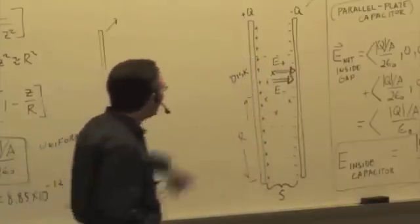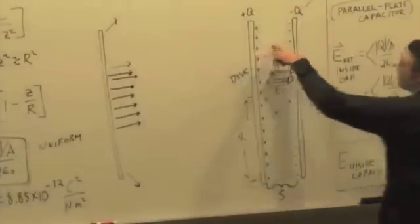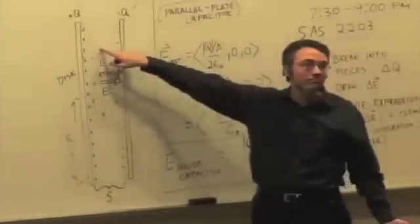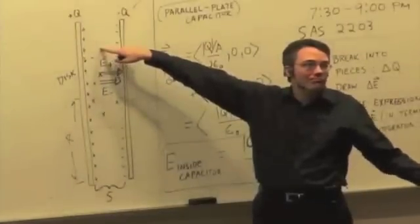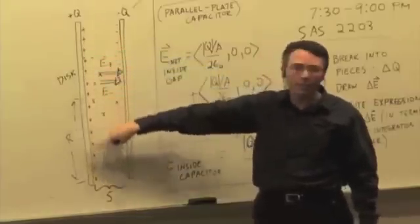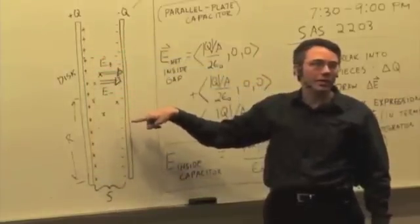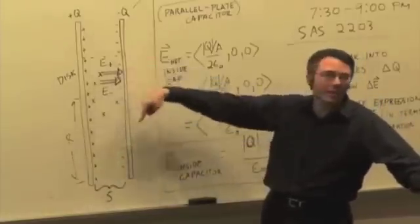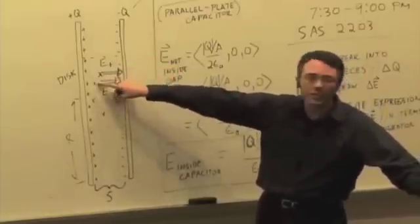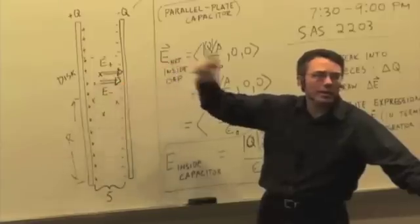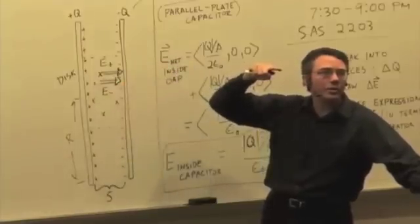Well, is there, what's inside this gap? What's here? What's at this location? Nothing. Yeah, there's nothing here, okay? So where is the charge? The charge is on the plates, okay? The charge is on the plates. The question we're asking is, what is the electric field made by those charge distributions at locations inside the gap, okay? Now, maybe I didn't answer your question, so ask it again.